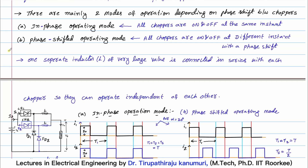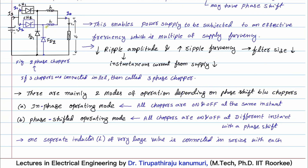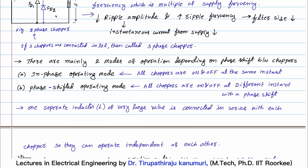There are many benefits of phase-shifted operating mode, which is why practically we go for phase-shifted operating mode only. One important point: in multi-phase choppers, each chopper needs a separate external inductor of very large magnitude so that each chopper can work independently. This inductor as well as the freewheeling inductor are taken separately for each circuit. The disadvantage is that multiple inductors are required, so the cost and size of the chopper increase slightly.